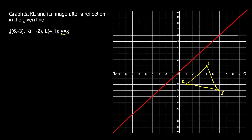Now let's reflect the triangle. Starting with point J — it's four and a half diagonal spaces from the line of reflection — so J prime is four and a half spaces on the other side. Point K is one and a half spaces away, so K prime is one and a half spaces on the other side. Point L is also one and a half spaces away, so L prime is one and a half spaces away. Now that all points are plotted, connect the dots to create the reflected triangle.